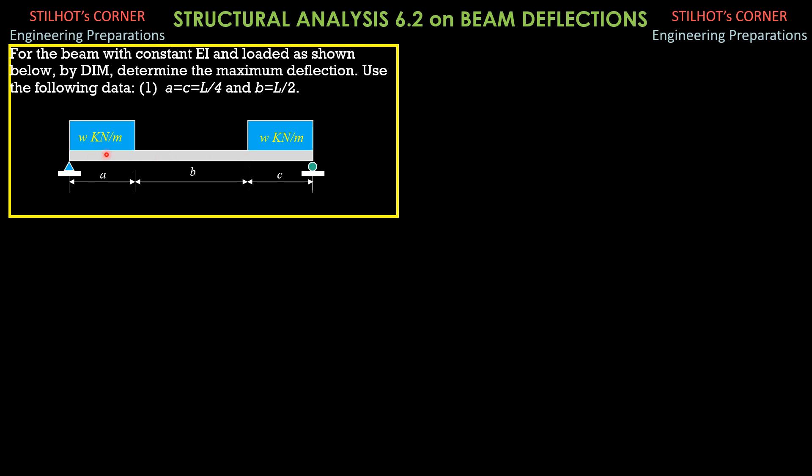So, by symmetry, because A is equal to L over 4 equal to C also, then the reaction here would be equal to the equivalent weight of this load, which is W times A or W times L over 4 as shown in the figure. This is also W times L over 4 because of symmetry.